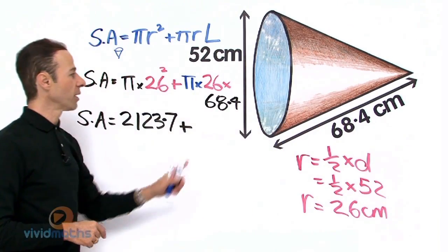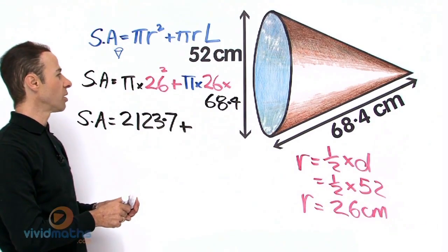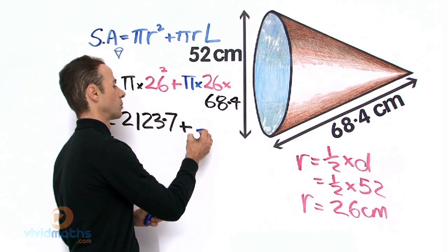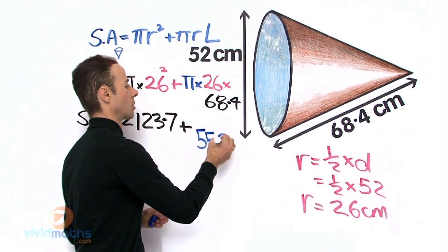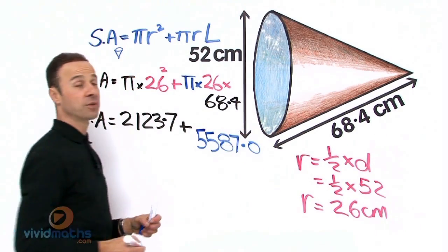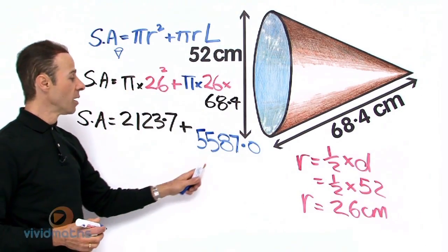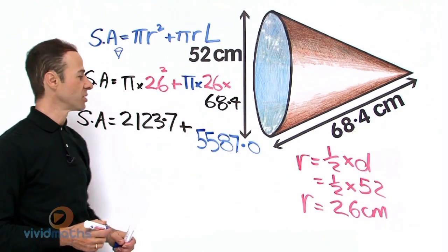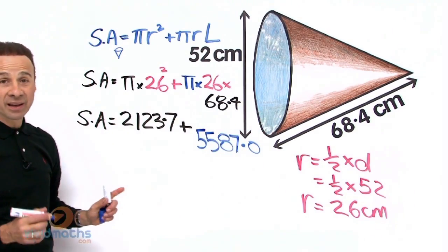That is going to give us a value of, you don't have to put the 0.0 but I am putting it in, 5587.0 for the curved part there. All we need to do now is simply add these two guys together. We will have the complete entire surface area for that conventional cone.